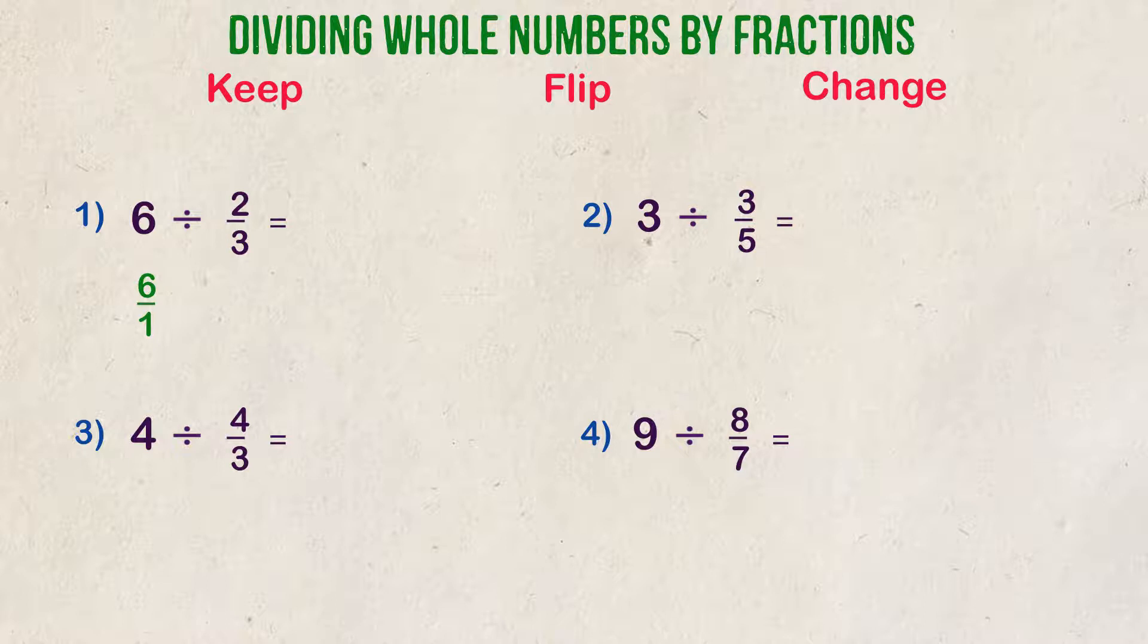The first step is K. That is for keep the first fraction the same. So, 6 over 1 stays 6 over 1.